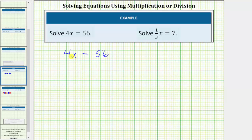The opposite operation of multiplying by 4 is dividing by 4. Therefore, to solve the equation, we divide both sides of the equation by 4.